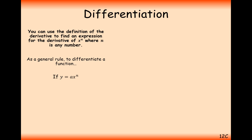Here is the rule you need to remember. If y equals some number times x to the power of n, then the differential is found in a two-step process: take the n on the power and multiply it at the front, and then reduce that power by 1.